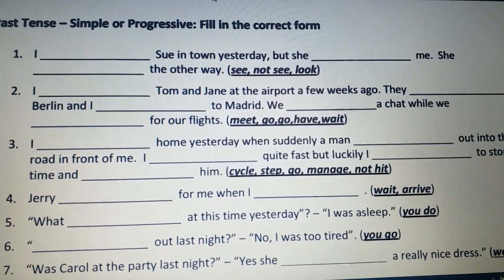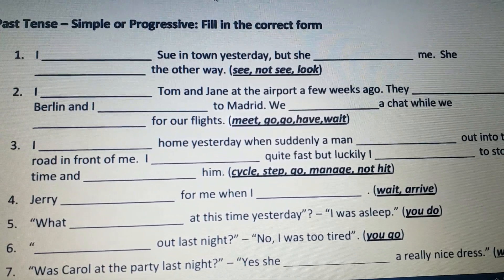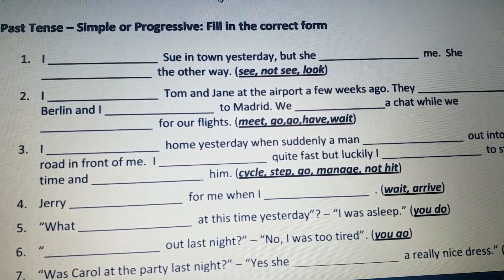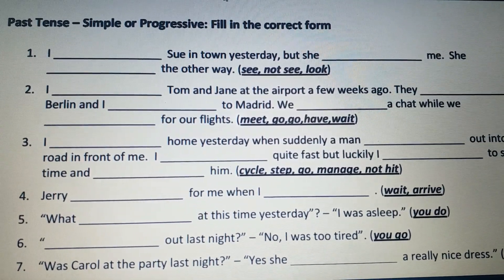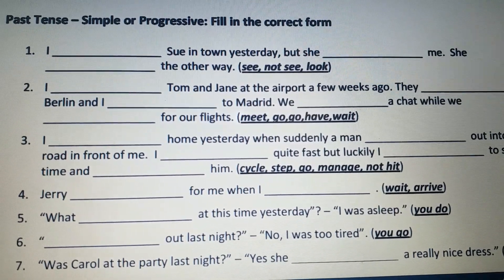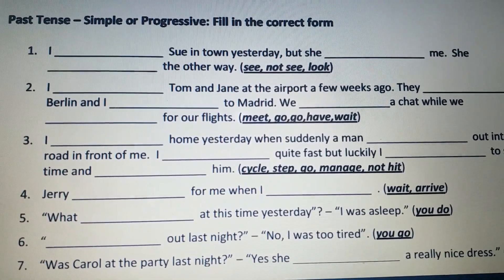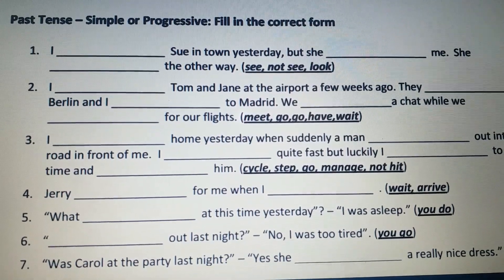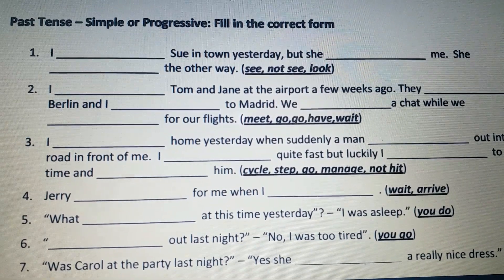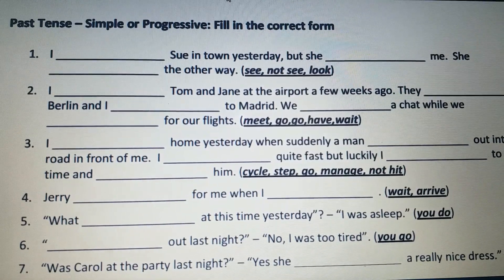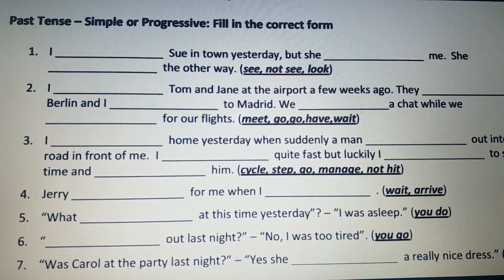The first sentence says: 'I ___ Sue in town yesterday but she ___ me.' In the first part, the action got completed, and for a completed past action we use simple past tense. The verb for the first blank is 'see'; the second form of 'see' is 'saw,' so: 'I saw Sue in town yesterday.' Then 'but she ___ me' — the verb given is 'not see,' so we make a negative sentence: 'but she did not see me.'